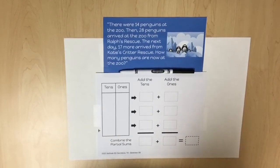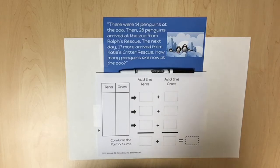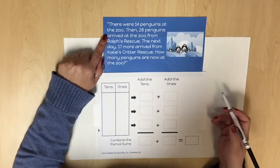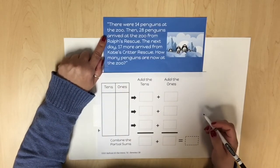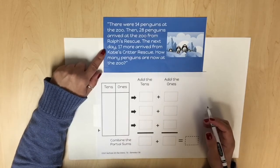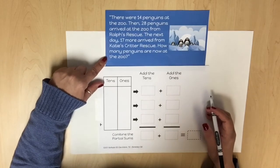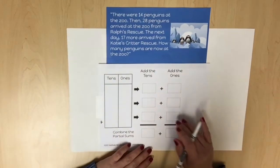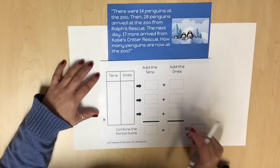Partial sums can also be determined using a vertical format. When utilizing partial sums in a vertical format, students may start by adding the ones or the tens before combining the partial sums. Let's look at our real-world scenario: there were 14 penguins at the zoo, then 28 penguins arrived from Ralph's Rescue, and the next day 17 more arrived from Katie's Critter Rescue. How many penguins are now at the zoo?